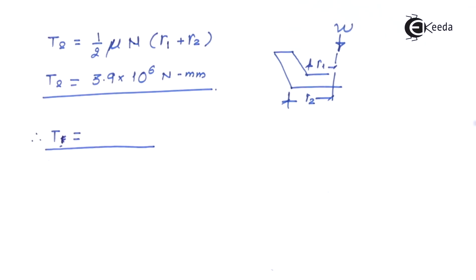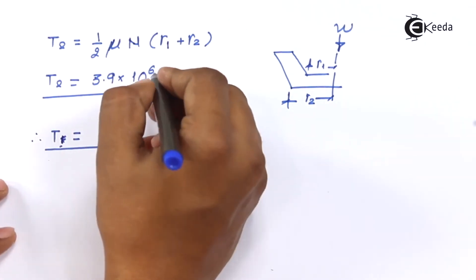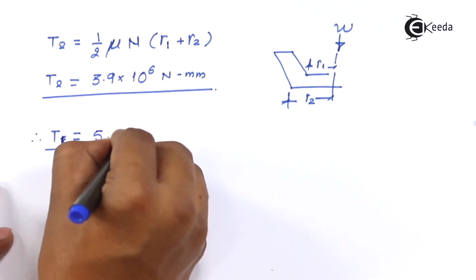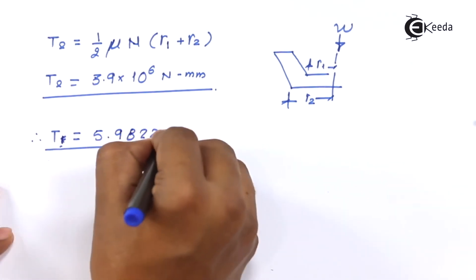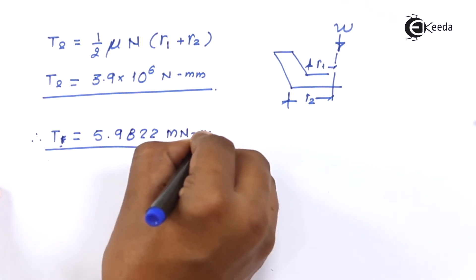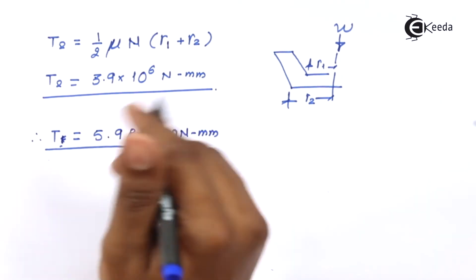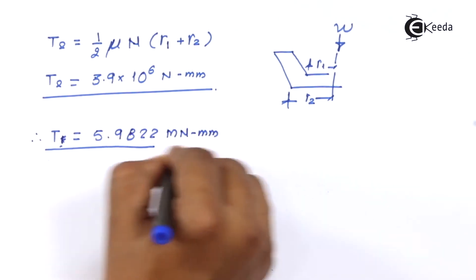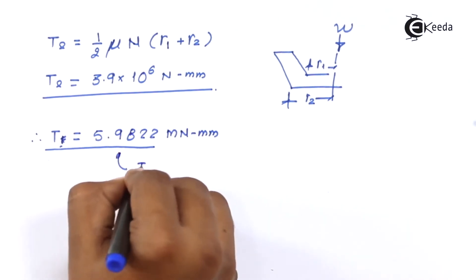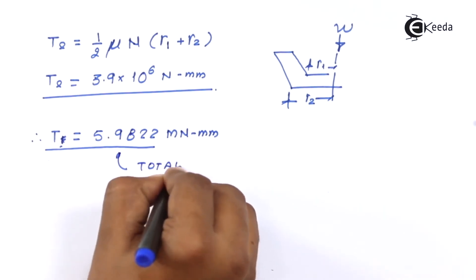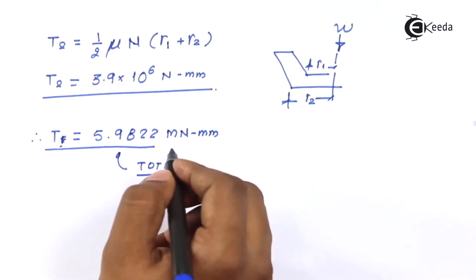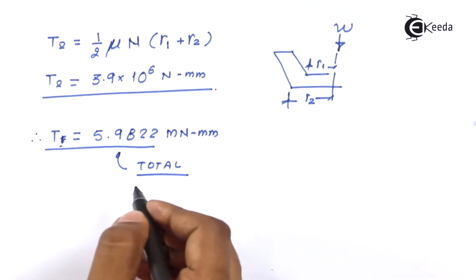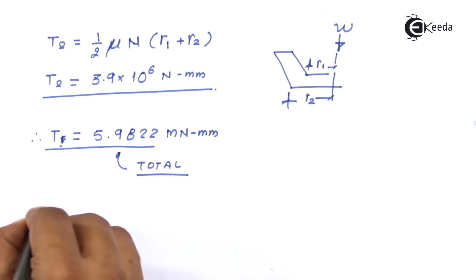Adding T1 and T2, the combined torque comes out to be 5.9822 MN·mm, or equivalently 5.9822 × 10⁶ N·mm. That is the total torque acting on the screw.